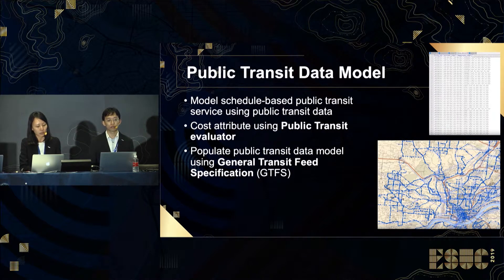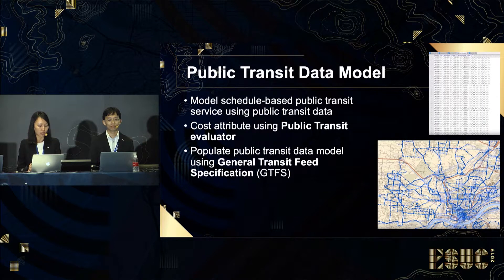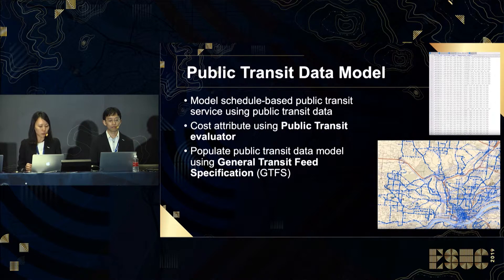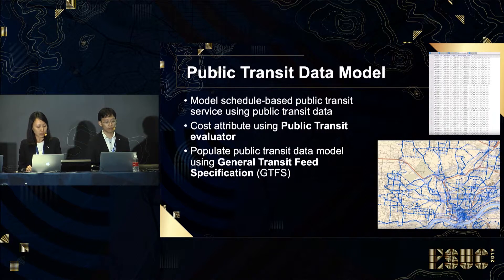The public transit data model allows the modeling of schedule-based public transit service using public transit data. The data in a network must include a specific set of tables and feature classes with a particular schema that defines the transit stops and lines, as well as the dates and times of where the transit service is available. These tables and feature classes can be used in a network data set as a time-based cost attribute configured using the public transit evaluator. The evaluator calculates the travel time along transit lines at a specific time of day based on the public transit schedule defined in a data model.